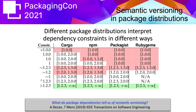We extended this analysis beyond NPM to other package distributions, in particular Cargo and RubyGems. To do so, we wrote a parser to analyze the different dependency constraints. We observed that even though specifying dependency constraints was syntactically similar across distributions, the interpretation is not necessarily the same. For example, the constraint '1.0' means different things: in Cargo it means anything in the major version 1 range, in NPM it means from 1.0 to 1.1, and in Packagist it means exactly 1.0.